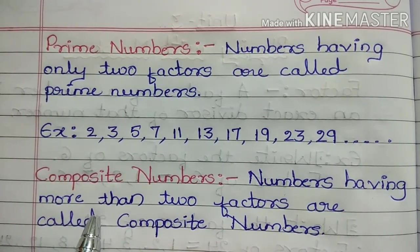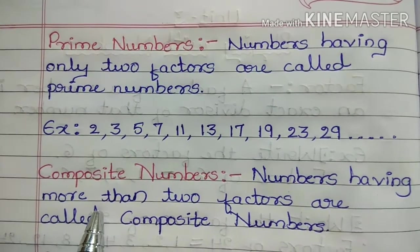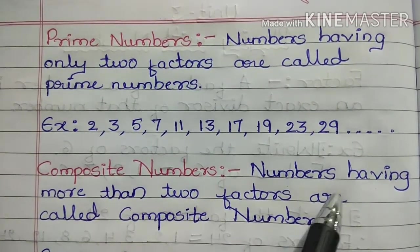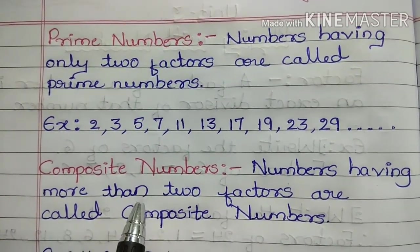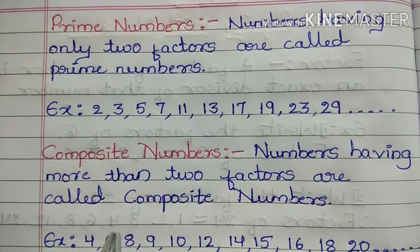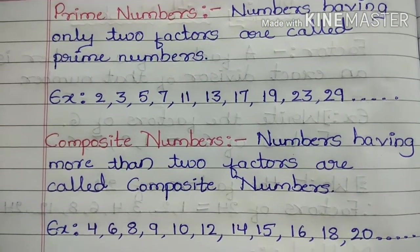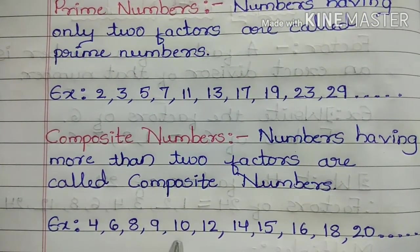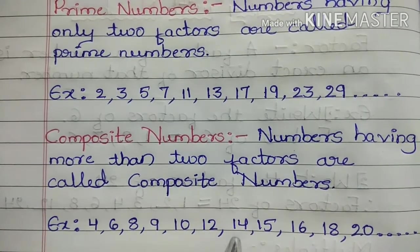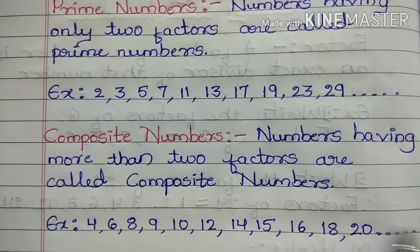Another type of number is composite numbers. What do you mean by composite numbers? Numbers having more than two factors are called composite numbers. For example: 4, 6, 8, 9, 10, 12, 14, 15, 16, 18, 20, and so on.